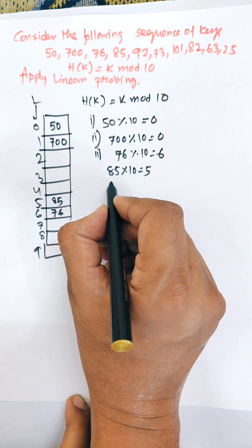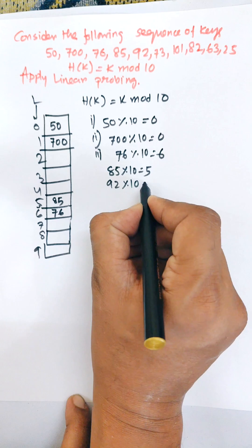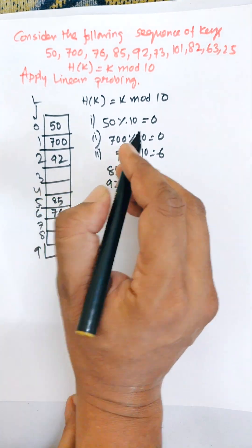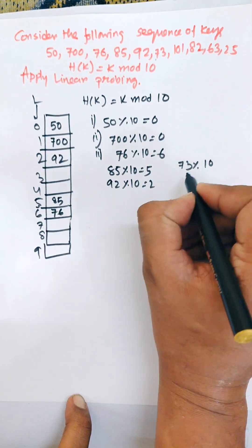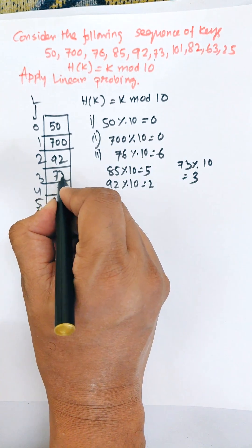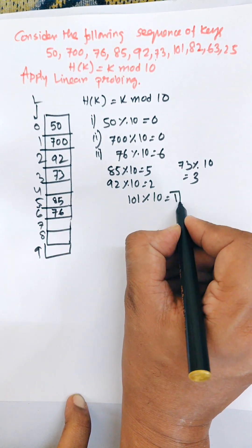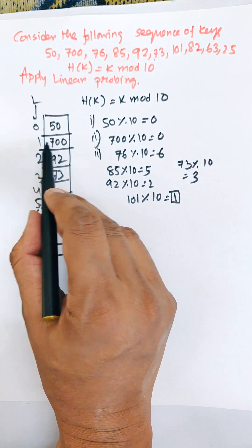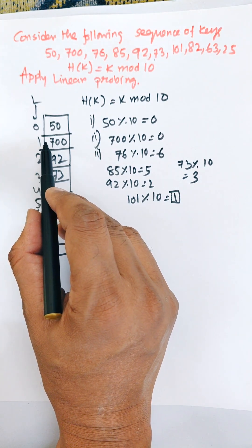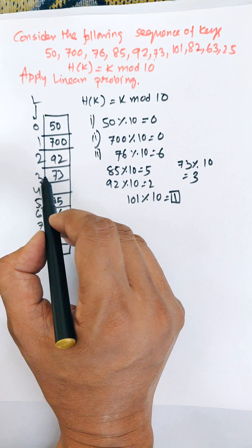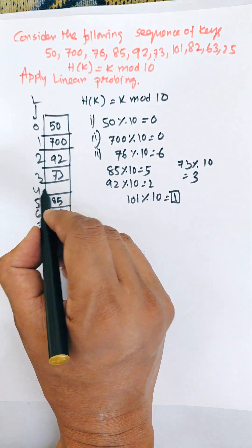Next is 92. 92 mod 10 equals 2, so it allocates the second position. 73 mod 10 equals 3, so it allocates the third position. Now 101 mod 10 equals 1, but 1 is already occupied, so we find the next location. It is also occupied, so we find the next location, which is 4. So 101 will allocate in the fourth location.